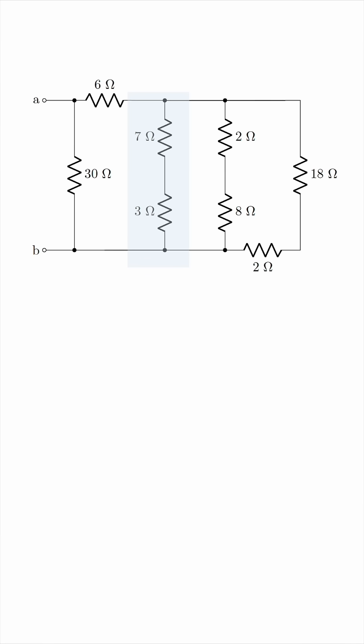The series combination will be parallel with this series combination of 2 and 8. Not only that, but these are also in parallel with this combination of 18 and 2. So this big block that I've highlighted here can be replaced by one resistor.